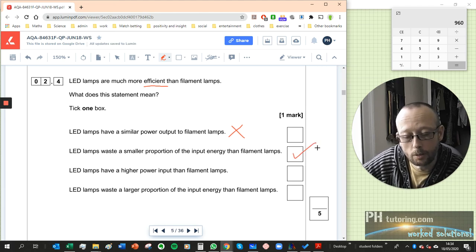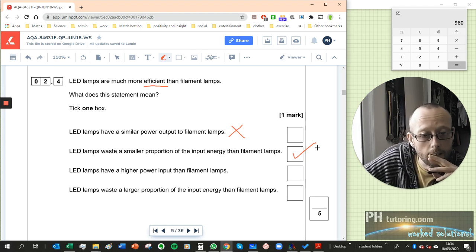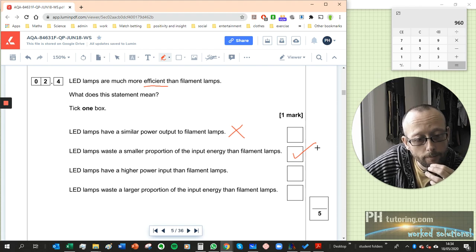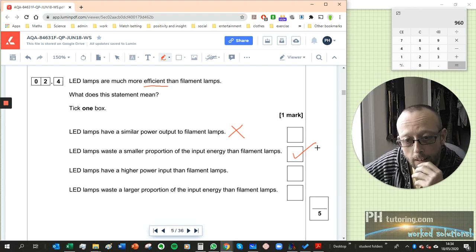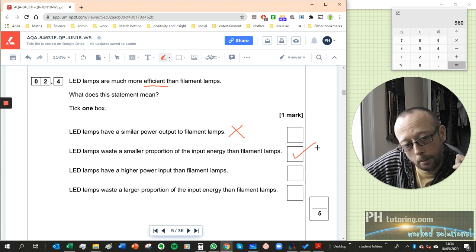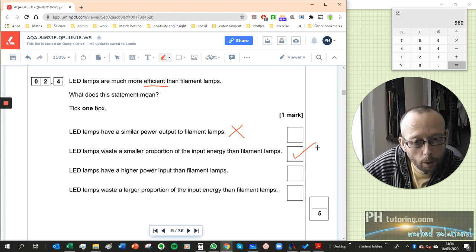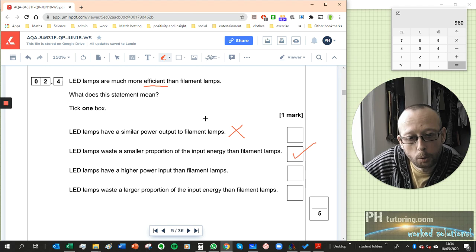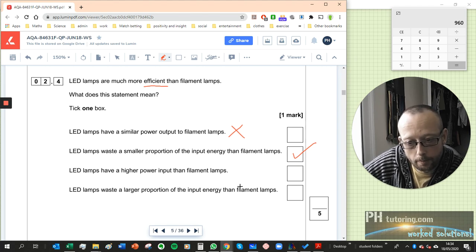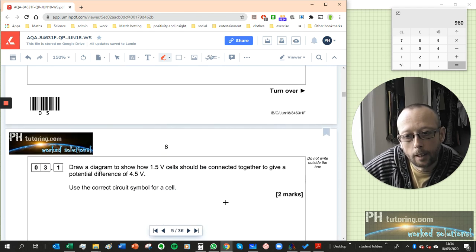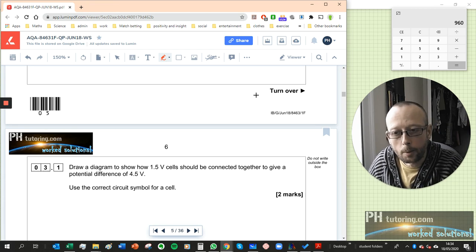LED lamps have a higher input than filament lamps. Um no, it actually would have a lower input, it's designed to produce the same amount of light with a lower input. But again it doesn't matter whether it's true or not, it's not asking you which one's true, it's asking you which one means the above statement. LED lamps use a larger proportion of the input energy than filament lamps, and that would be definitely false and also not meaning the above statement. Okay, all right we'll stop there and I'll make a video for question three.